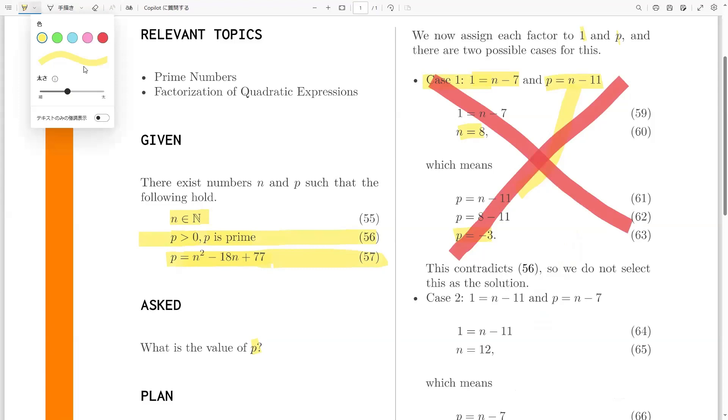So, probably, the second case, the only other case, is the solution. Which is the case when p equals n minus 7, and 1 equals n minus 11. So, let's solve the first one.